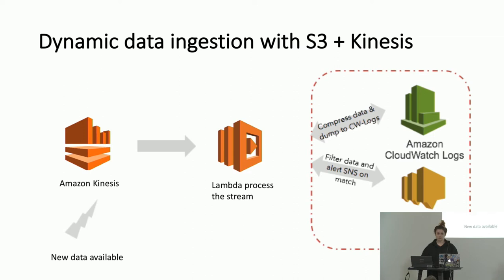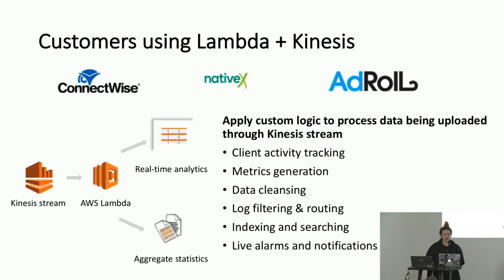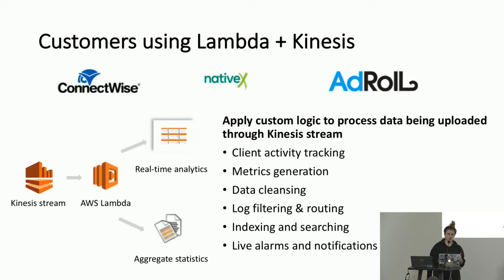Once SNS is alerted, someone or something else will get that notification. Customer examples using Lambda and Kinesis: custom logic applied to data running through your Kinesis stream — activity tracking, generating metrics, cleaning or filtering data, log filtering, indexing, alarms. There's a theme here: we're watching the data, whether it's in S3, Kinesis, or DynamoDB. We're looking for something specific, or taking an action every time, and then doing something in response to that change.